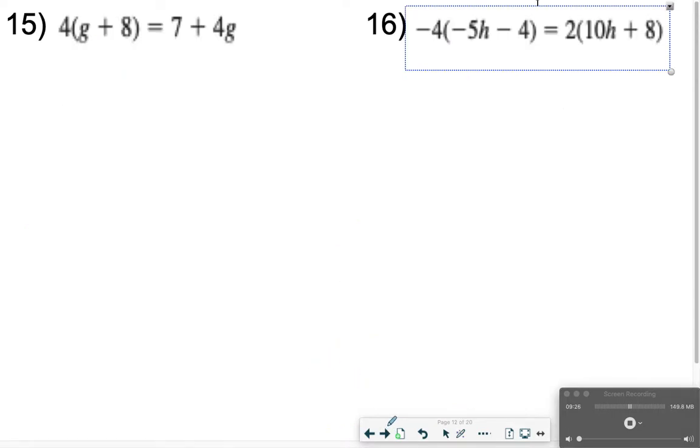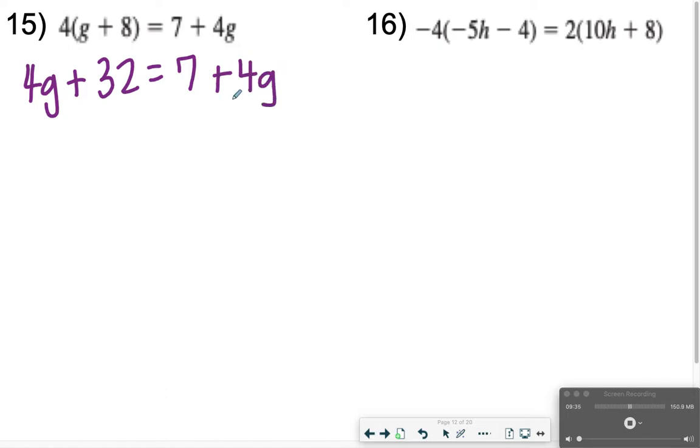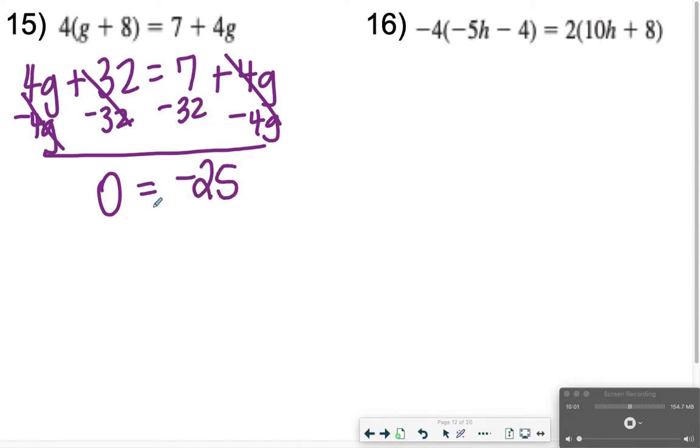15, moving right along, again, we're distributing first, so I'll have 4g plus 32 equals 7 plus 4g. Be careful what's going to happen here. I'm going to move my g's all to the left, so minus 4g minus 4g, and then I'm going to move my constant of 32 to the right. Minus 32, minus 32. These 4g's are going to cancel out, and this 32 is going to cancel out, so I'm left with 0 on the left side, and then 7 minus 32, that's going to give me negative 25. 0 is not equal to negative 25, so we're going to say for number 15, this one is a no solution as your answer.